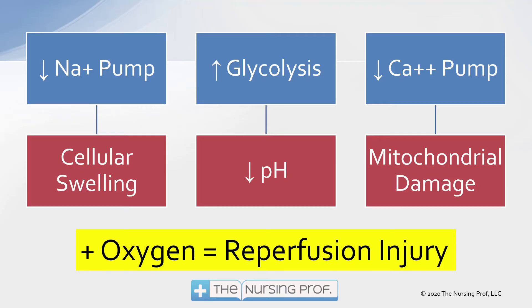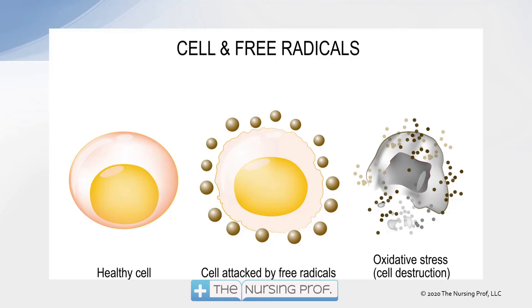So let's take a look at what's going on there with oxygen to cause this reperfusion injury. Here's our cell and here are the free radicals that are being produced. The healthy cell is on the left side, and here's that healthy cell being attacked by those free radicals. Remember, they're designed to kill off bacteria, but they're not specific — they just can't pick out the bacteria. Usually our white blood cells do that for us. However, if they're just circulating, they're going to start attacking even good cells, and then we get this oxidative stress, which leads to cell destruction.